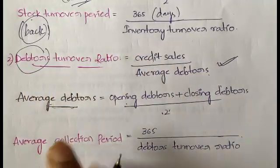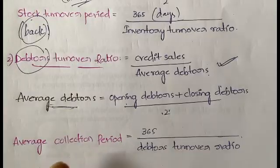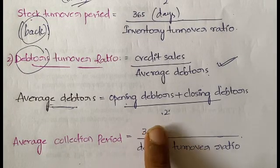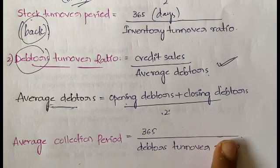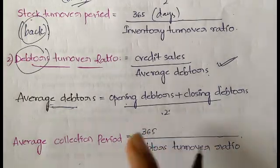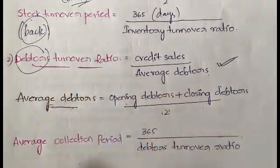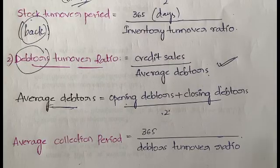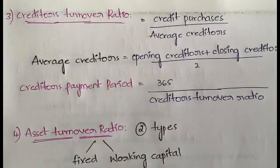Once you have the debtors turnover ratio, you need to calculate the average collection period. Average collection period is calculated as 365 divided by the debtors turnover ratio. That is how you find the average collection period.